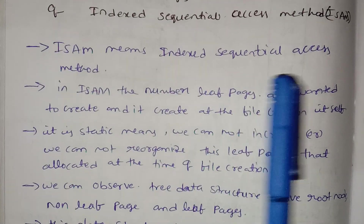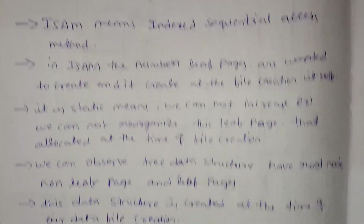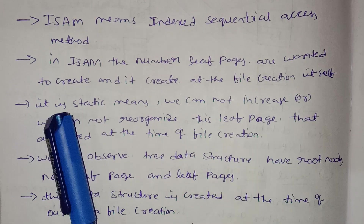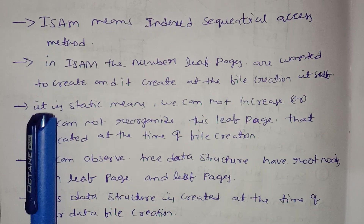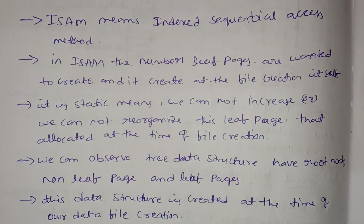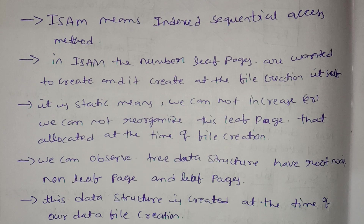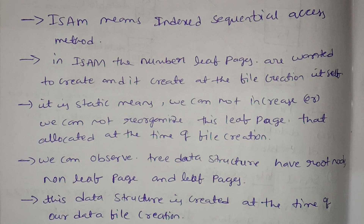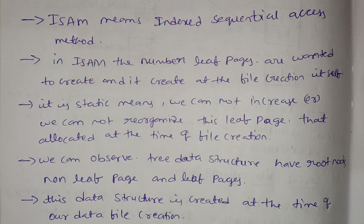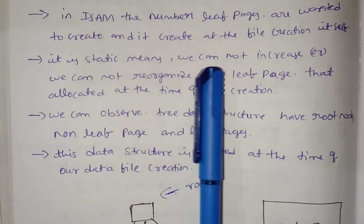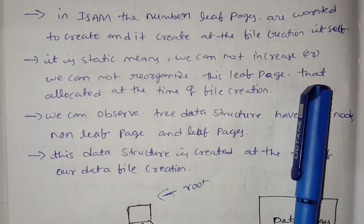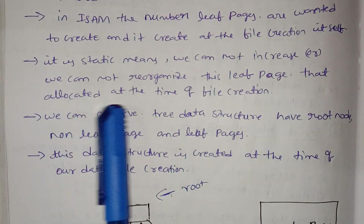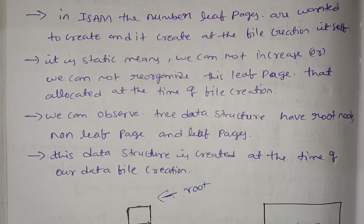ISAM stands for Indexed Sequential Access Method. In ISAM, the number of leaf pages are fixed at file creation time. It is static, meaning we cannot increase or reorganize the leaf pages after the file has been created.